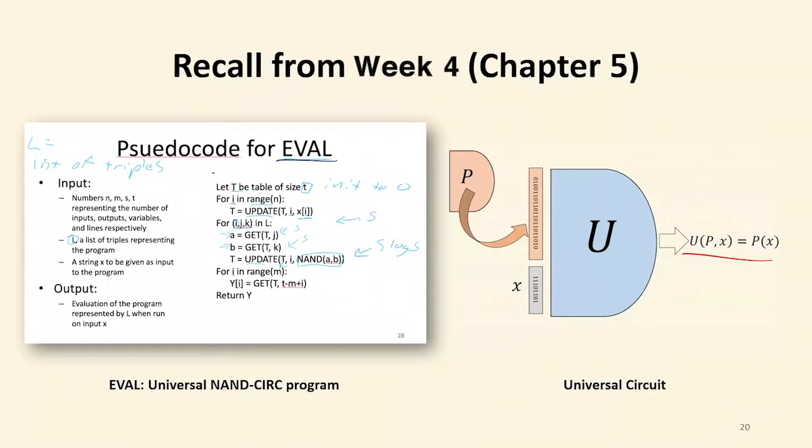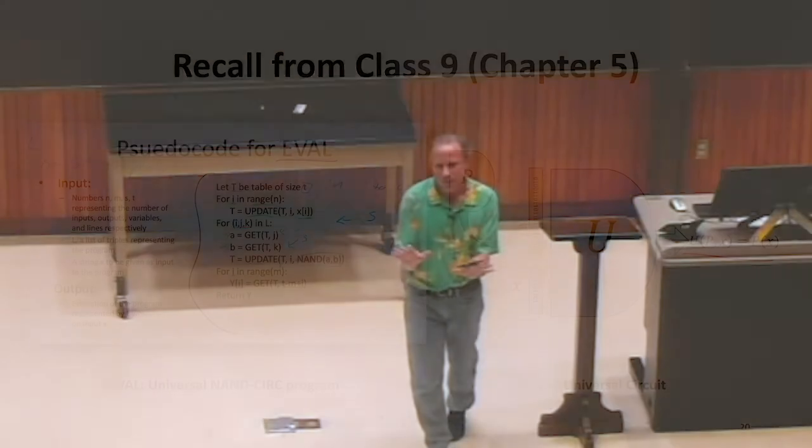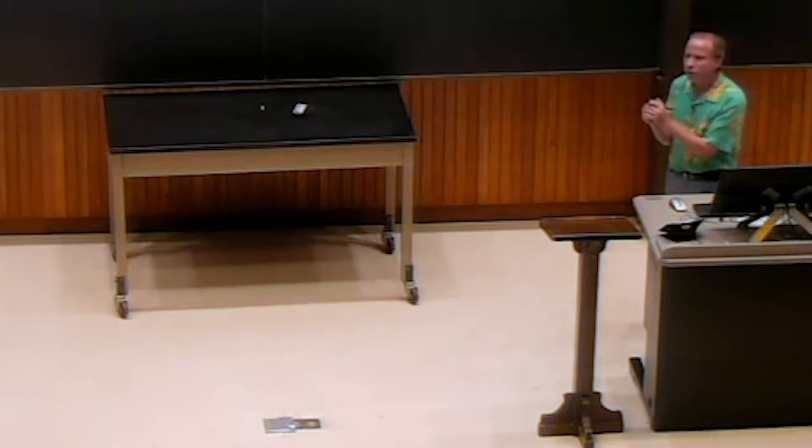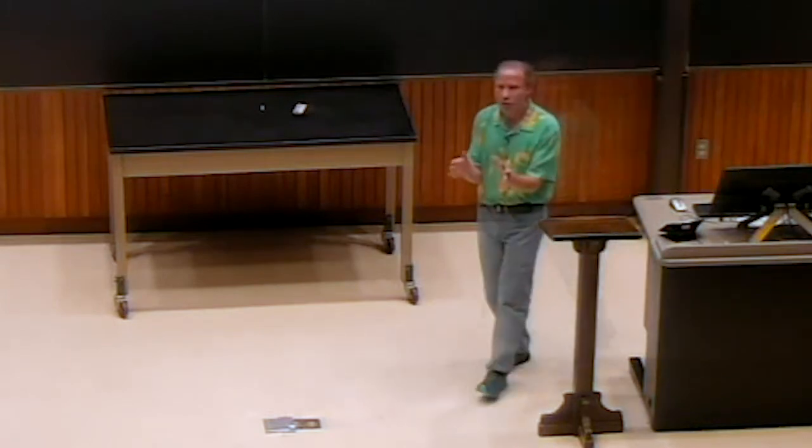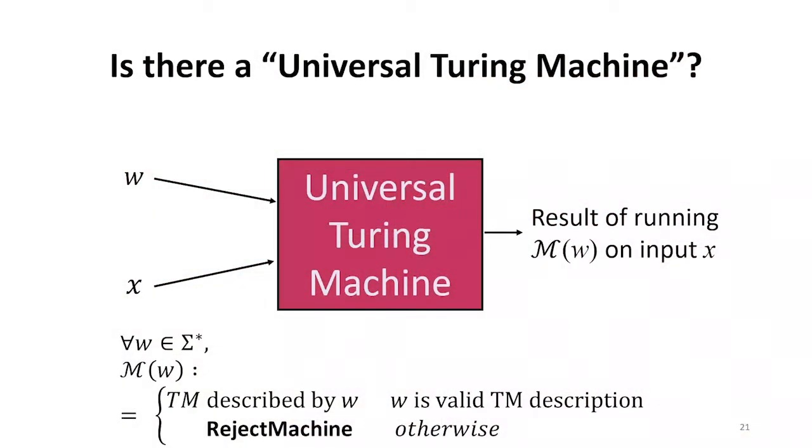We've seen universality in finite computation already. What universality means for Turing machines is exactly the same thing, but now it's even more powerful because it's not limited to finite inputs. I should say, the inputs are always finite. I misspoke there. Inputs are always finite. We always need to write down our inputs. Where this is not finite computation is that we can have the same machine that can work on any size input, which was not something we could do with circuits.